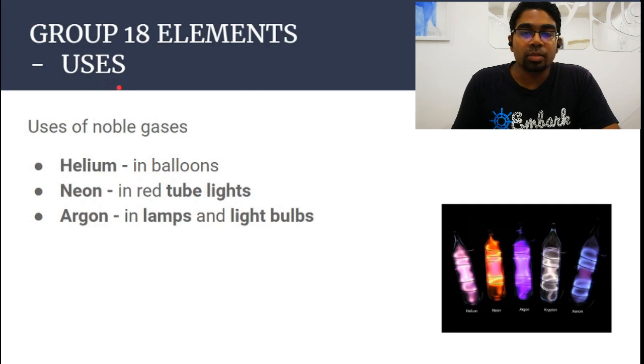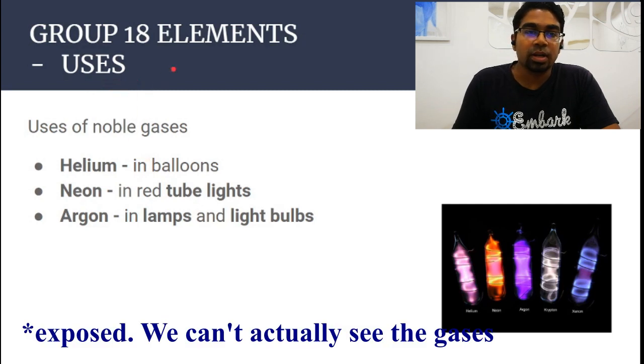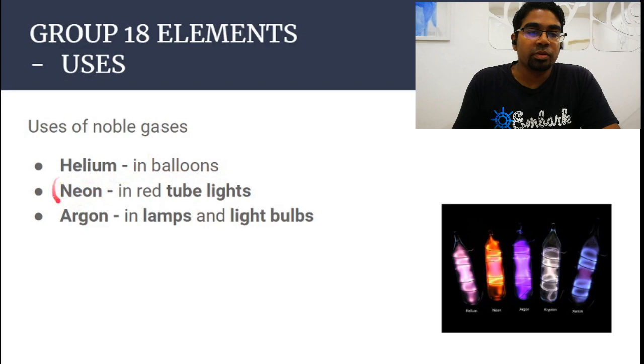Uses of Group 18 elements - we see them every day. Helium is very common, used in balloons. Neon is used in red tube lights. Argon is used in lamps and light bulbs. These are some uses of noble gases.